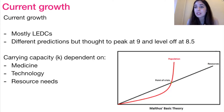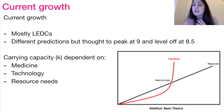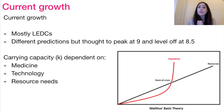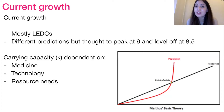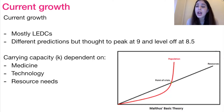Carrying capacity is the maximum number of organisms that an environment can sustainably support over a long period of time. On the right, I've got a diagram of the Malthusian theory, which was basically a model that predicted the real limiting factor would be resources — we would come into a point of crisis where we wouldn't have enough resources to go around, especially food, which they highlighted as the key limiting factor.